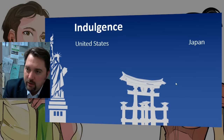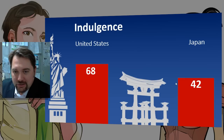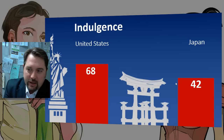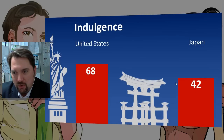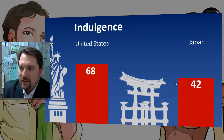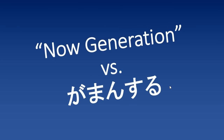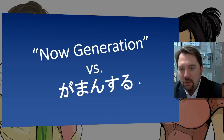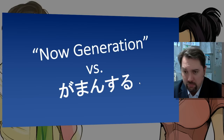If you said the United States is more likely to indulge, you are correct. Japan is more likely to curb itself, because there's an idea of saving face — you don't want to look like you're standing out or having too much fun when everyone is supposed to be in it together. To illustrate this in the States, we see the 'now generation' — instant gratification, fast food, ordering things and receiving them the next day via internet.